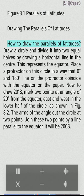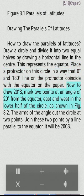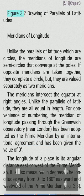How to draw the parallels of latitudes: Draw a circle and divide it into two equal halves by drawing a horizontal line in the center. This represents the equator. Place a protractor on this circle in a way that 0 degrees and 180 degrees line on the protractor coincide with the equator on the paper. Now to draw 20 degrees south, mark two points at an angle of 20 degrees from the equator, east and west in the lower half of the circle. The arms of the angle cut the circle at two points. Join these two points by a line parallel to the equator. It will be 20° S.